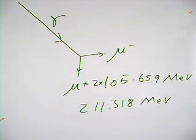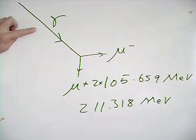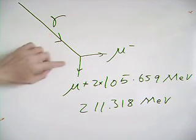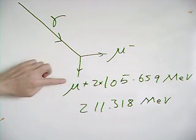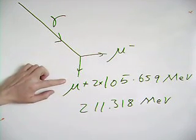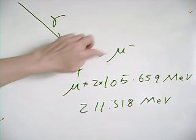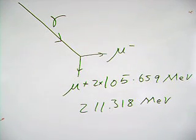That's the minimum energy required. Now if this photon had more energy than that — say the photon had an energy of 300 mega electron volts — the pair would still be produced, and the excess energy would be in the kinetic energy of the pair that are made, the muon and the antimuon.